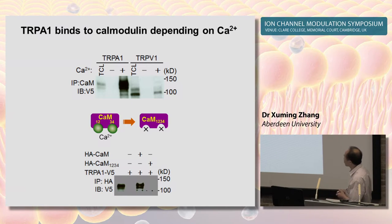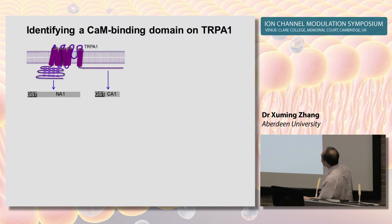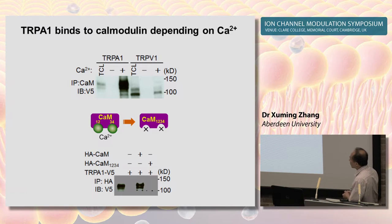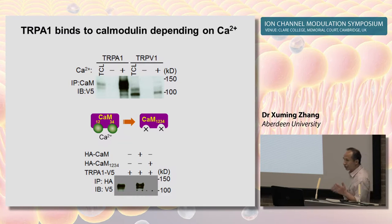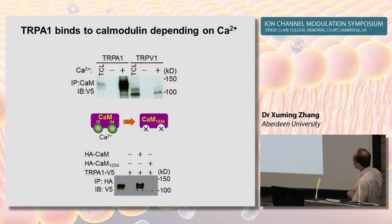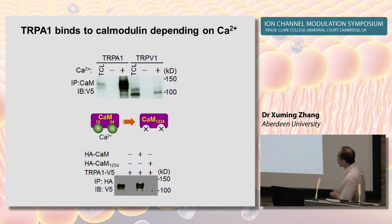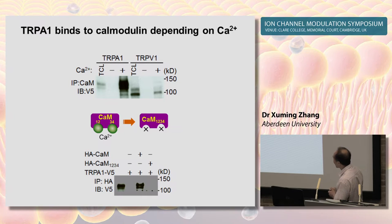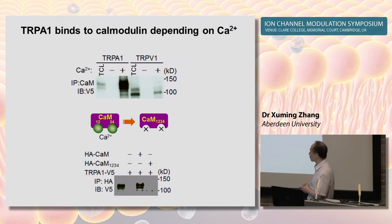Calmodulin has four calcium-binding sites, with two located at the N-terminal and two at the C-terminal of calmodulin respectively. Mutating these four calcium-binding sites deprives calmodulin of its ability to sense calcium. We used wild-type calmodulin and this calcium-binding mutant to perform a co-immunoprecipitation experiment. Consistent with the pull-down assay, TRPA1 also binds to wild-type calmodulin. However, this binding was abolished by mutating the four calcium-binding sites, demonstrating that calmodulin binds to TRPA1 in a calcium-dependent manner.